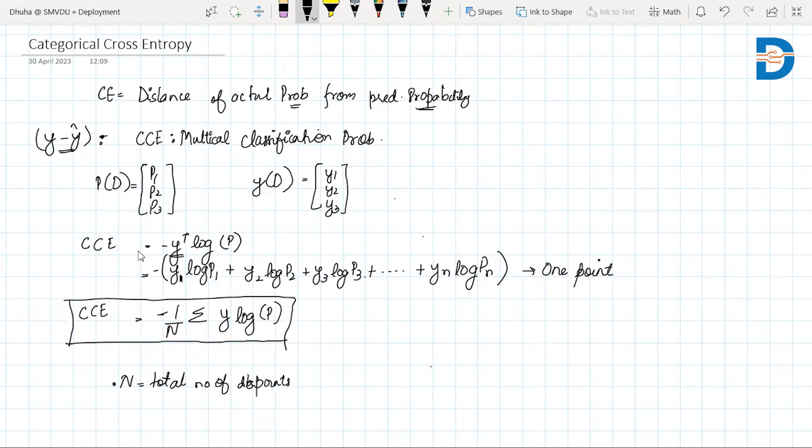So remember, if you have a multi-class problem and want to calculate its cost or loss function, you use categorical cross entropy. This involves the total number of data points, the actual probability distribution of actual values, and the log of probability distribution of predicted values.